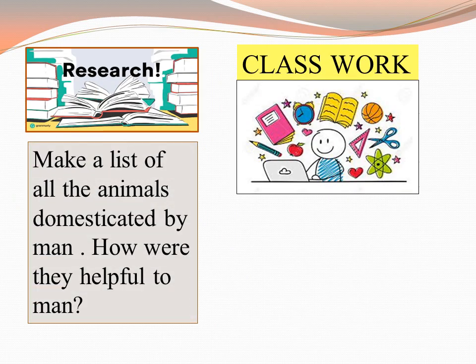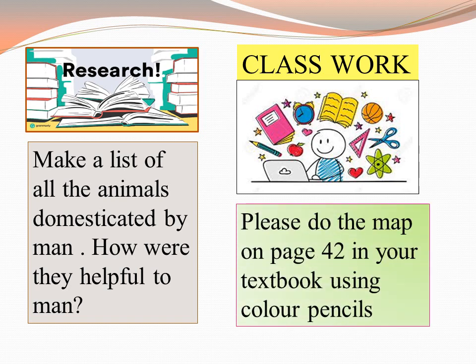Here we come to the research work, children. I want you to do a bit of research — make a list of all those animals domesticated by man, and how those animals were useful to man. Next is a bit of classwork, children, in which you need to take colored pencils and trace out the map which is in your textbook. Please do it in your textbook — it is textbook work.